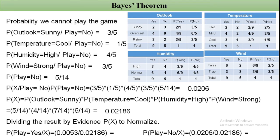Using Bayes' theorem, we normalize by dividing by P(X). P(Yes | X) = 0.0053 / 0.02186 = 0.242. P(No | X) = 0.0206 / 0.02186 = 0.9421.